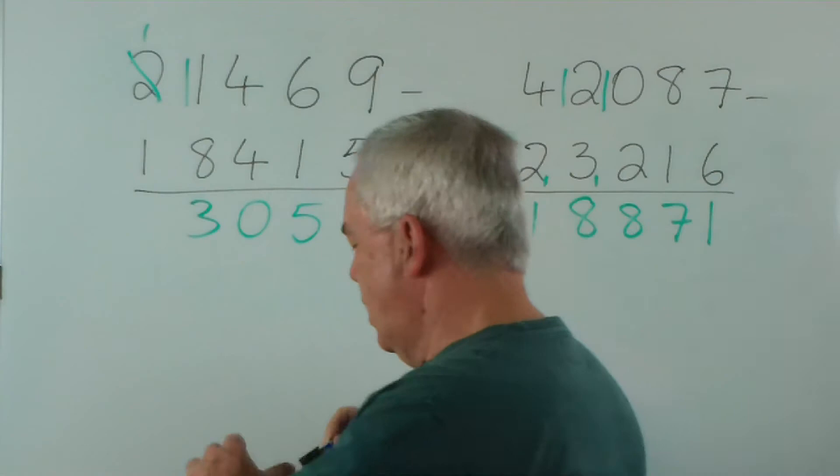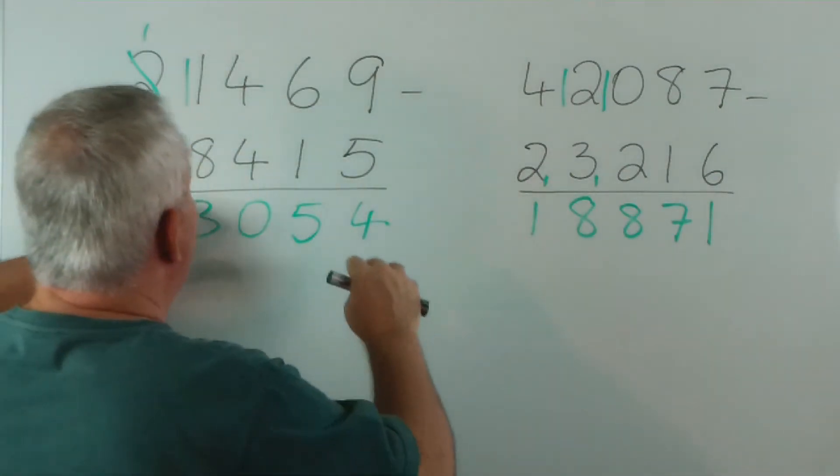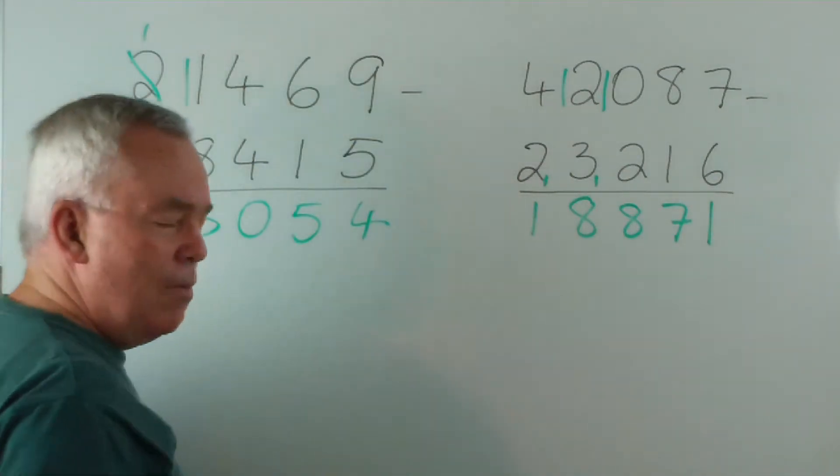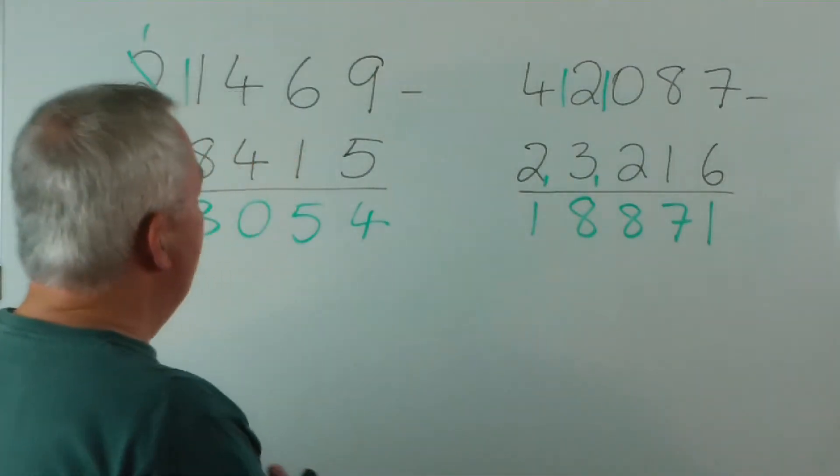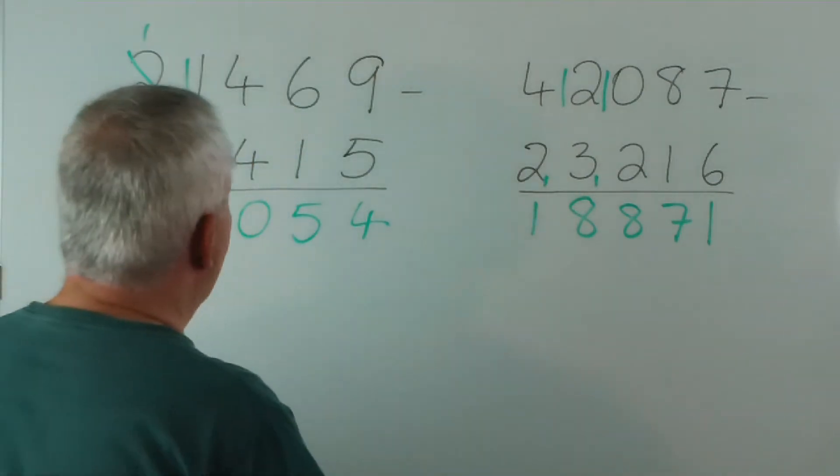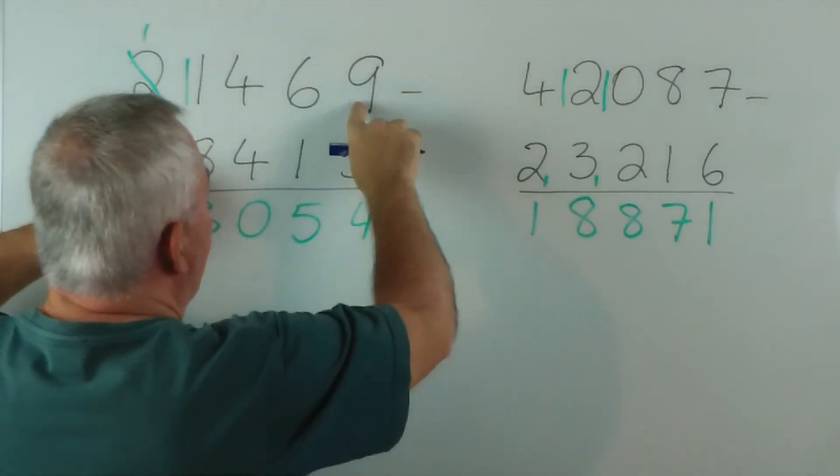It comes from number theory, but basically we reduce each of these three numbers to a remainder base 9. That is a remainder if we divide by 9. And it's simple, we just cast out 9.